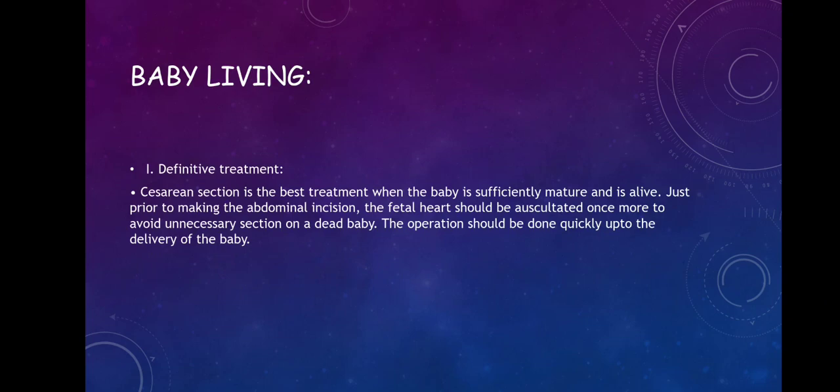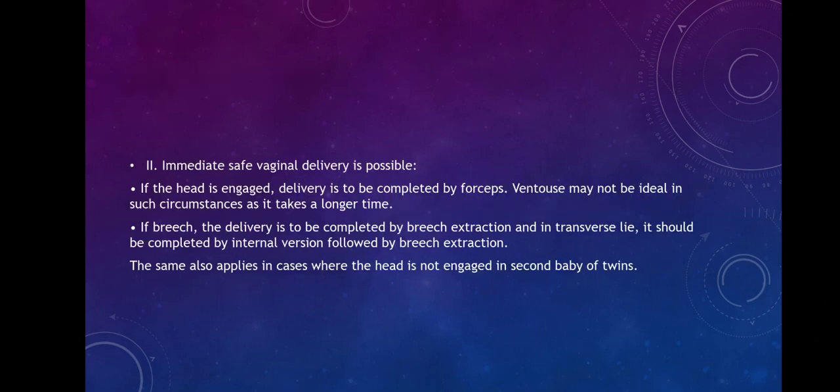If immediate vaginal delivery is possible and the head is engaged, delivery is to be completed by forceps. Ventouse may not be ideal in such circumstances as it takes longer. If it is breech, the delivery is to be completed by breech extraction, and in transverse lie it should be completed by internal version followed by breech extraction. The same also applies in cases where the head is not engaged in the second baby of twins.